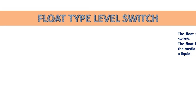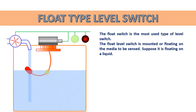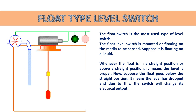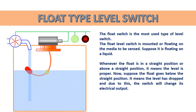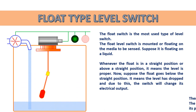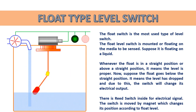The float switch is the most used type of level switch. It is mounted or floating on the media to be sensed — suppose it is floating on a liquid. Whenever the float is in a straight position or above it, the level is proper. If the float goes below the straight position, the level has dropped and the switch will change its electrical output. There is a reed switch inside for the electrical signal, moved by a magnet which changes position according to float level.